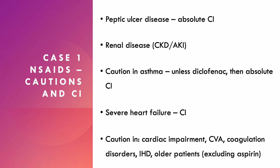NSAIDs should be used with caution in asthma patients — diclofenac is absolutely contraindicated — because NSAIDs can induce bronchoconstriction, making asthma worse. It's best guided by whether the patient can take them without problems. You also need caution in cardiac impairment, CVAs, coagulation disorders, ischaemic heart disease, and in older patients it's best to avoid them excluding aspirin, as NSAIDs have been shown to increase the risk of heart attacks and strokes.